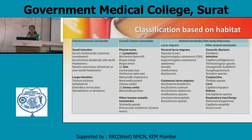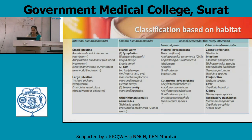Somatic human nematodes include filarial forms — lymphatic: Wuchereria bancrofti, Brugia malayi, and Brugia timori. Skin forms: Loa loa, Onchocerca, Mansonella streptocerca, Mansonella ozzardi (present in serous cavity). Serous cavity: Mansonella perstans. Other somatic human nematodes are Trichinella spiralis and Dracunculus medinensis, also called guinea worm.